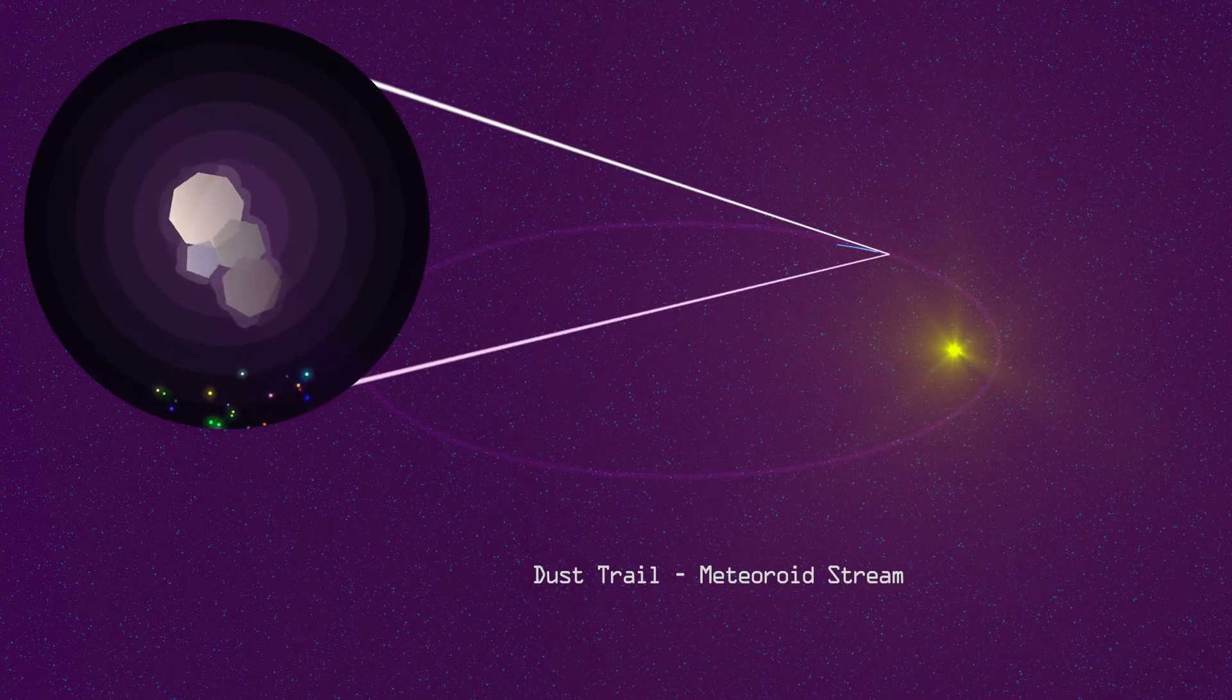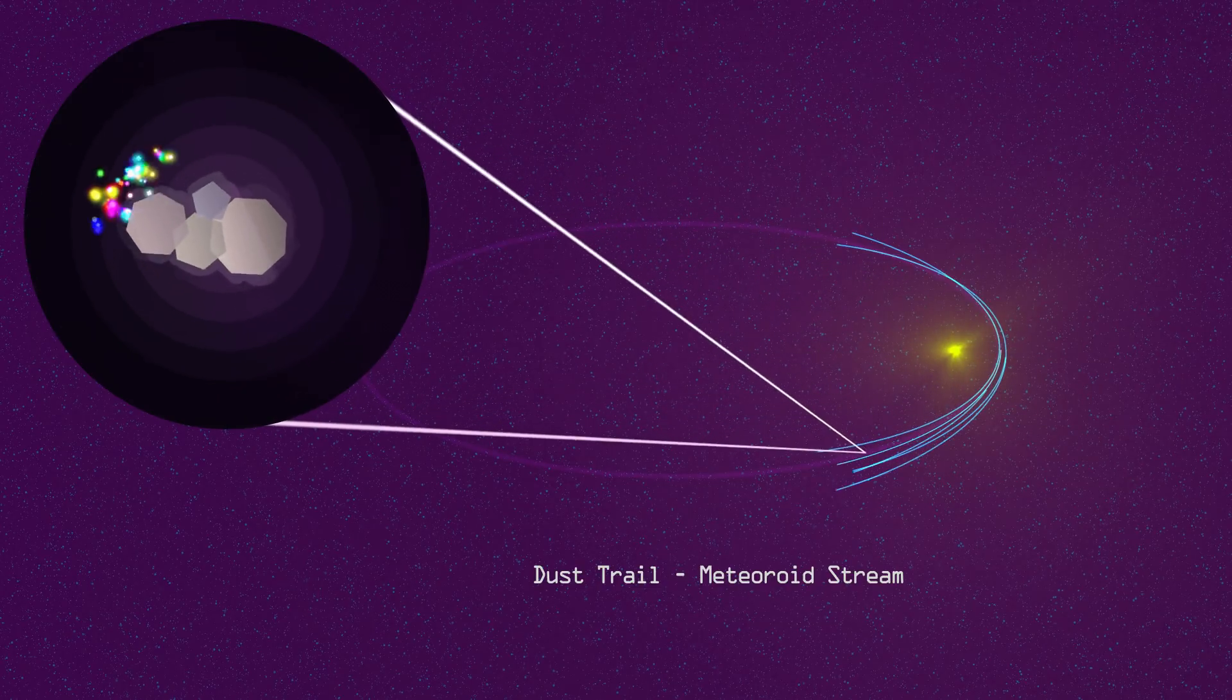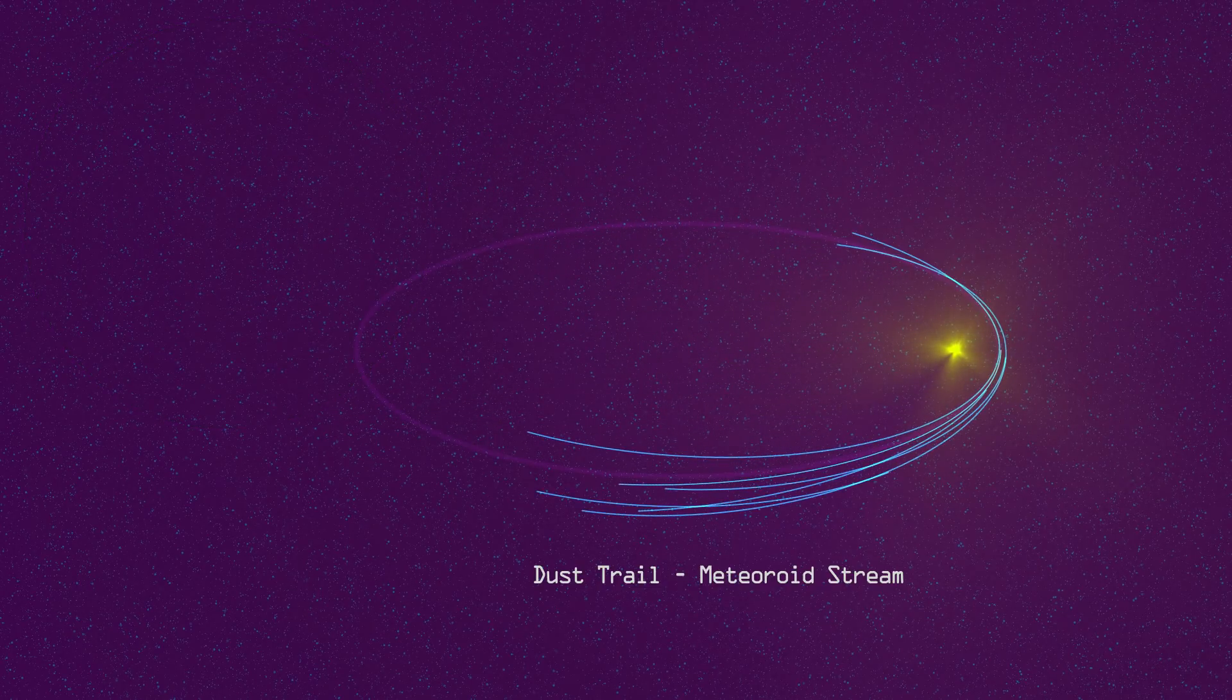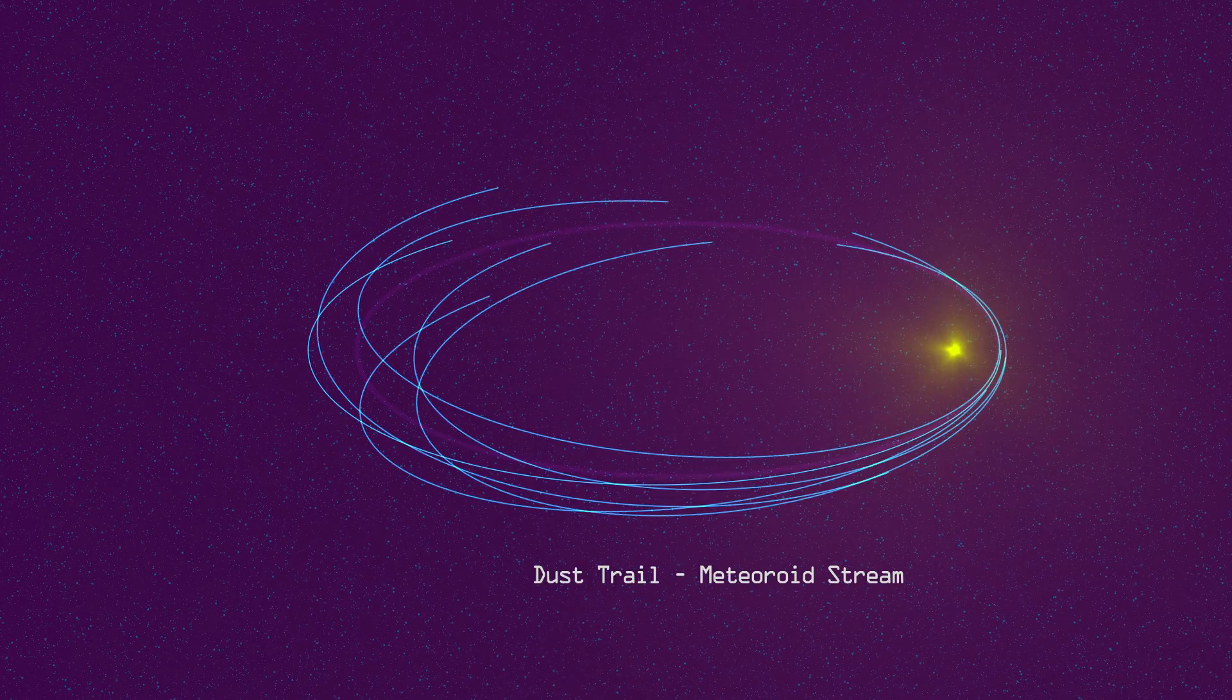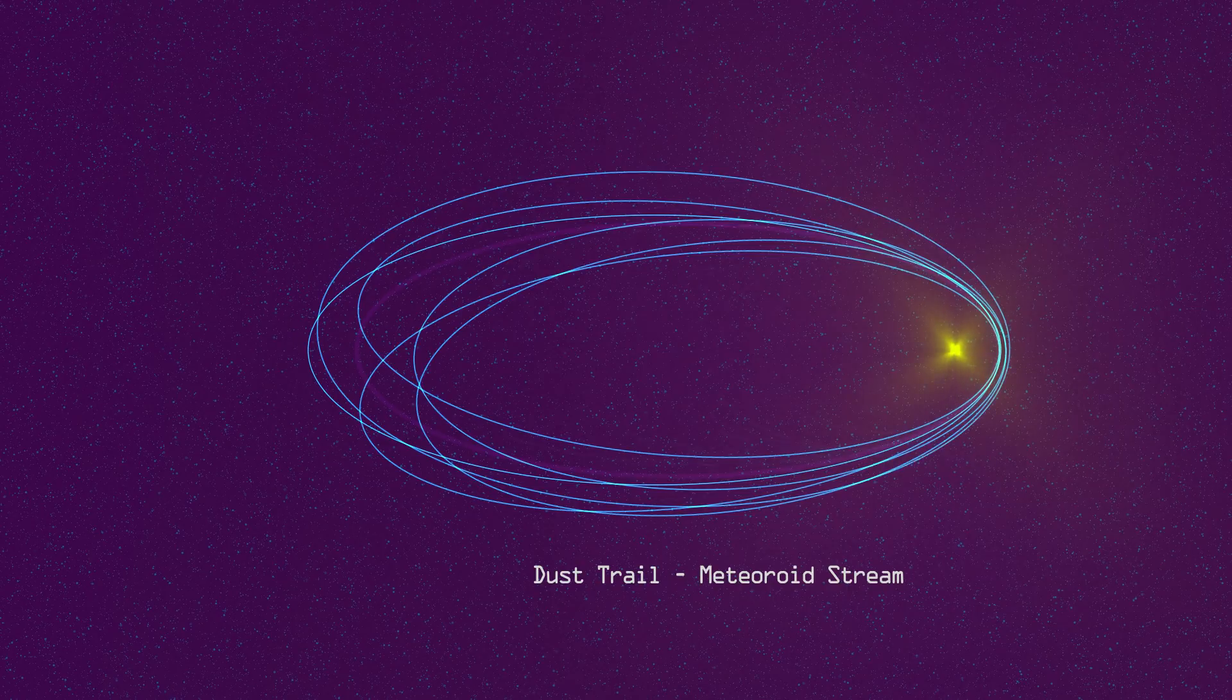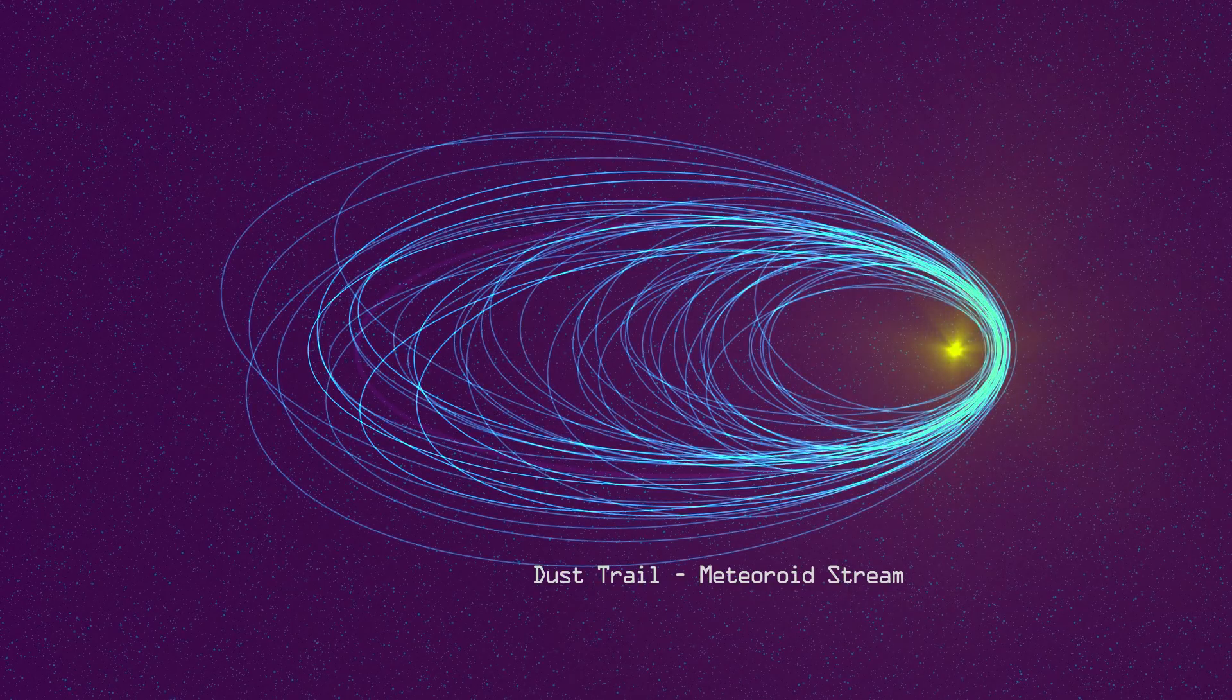The larger particles ejected from the comet continue in roughly the same orbit. This is called the dust trail, or meteoroid stream. After making multiple passes into the sun, completing the same orbit again and again, the comet has ejected enough space dust to form a complete meteoroid stream. This debris fills the orbit of the comet.